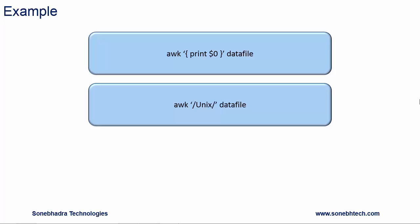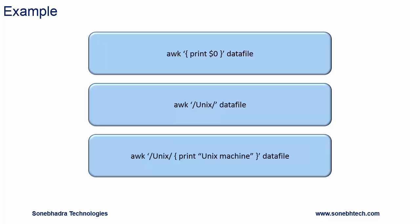Let's see an example which has both pattern and command: awk, pattern, command, data file. So both pattern and command are available. It will check the pattern in each line and if the pattern is found, then the command will be applied. So if pattern text unix is found in a line of the data file, then the command will be applied.